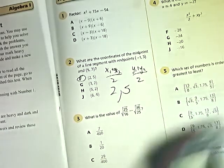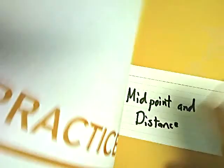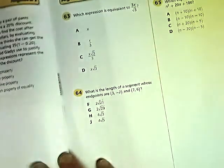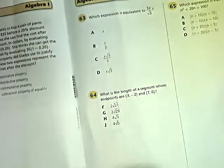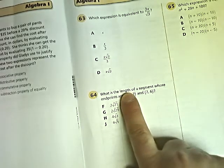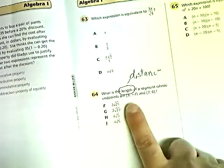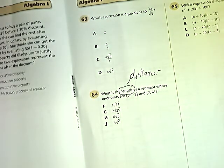Another one based on midpoint and distance. Number 64. What is the length? So length can also mean distance. A segment whose endpoints are three, negative two, and seven, negative six.